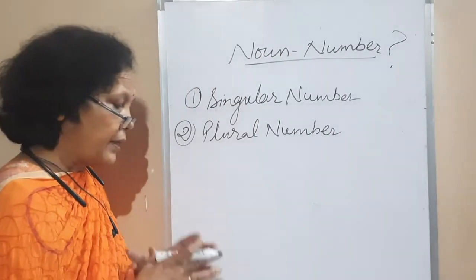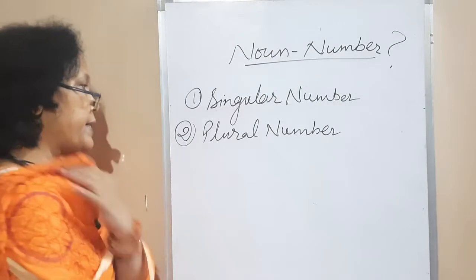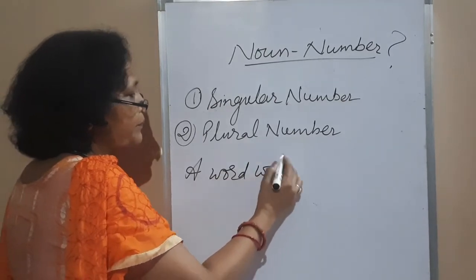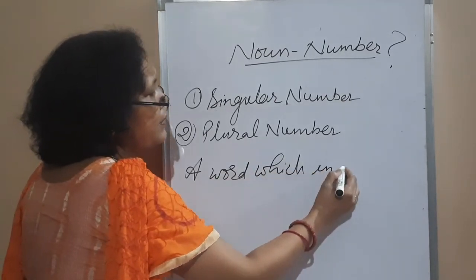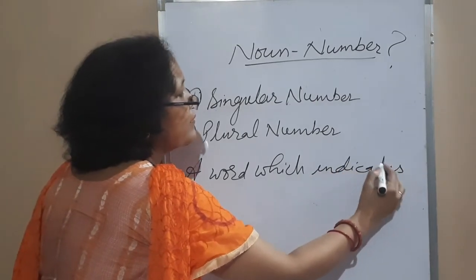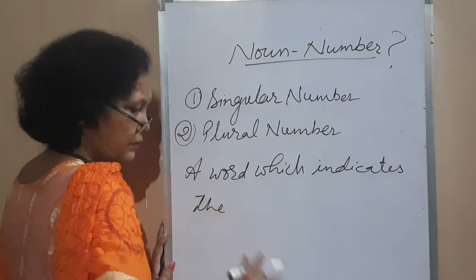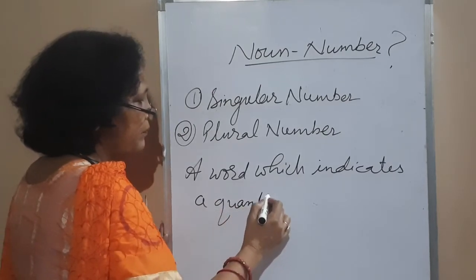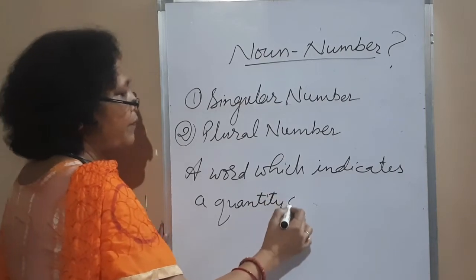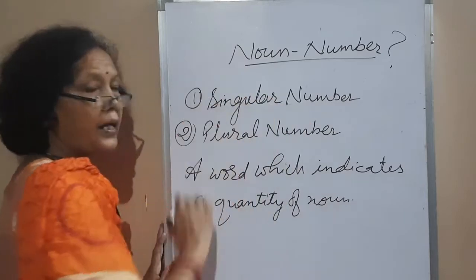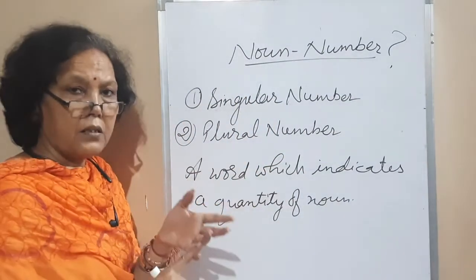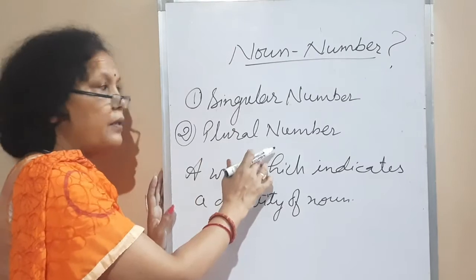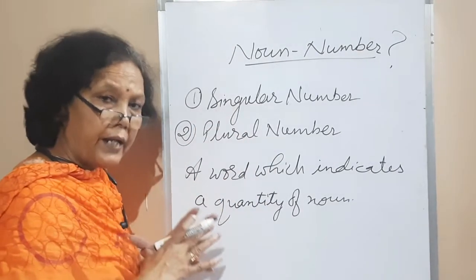A word or symbol that indicates a quantity — that is the number. The singular number indicates one thing, one person, or one place. The plural number shows more than one.